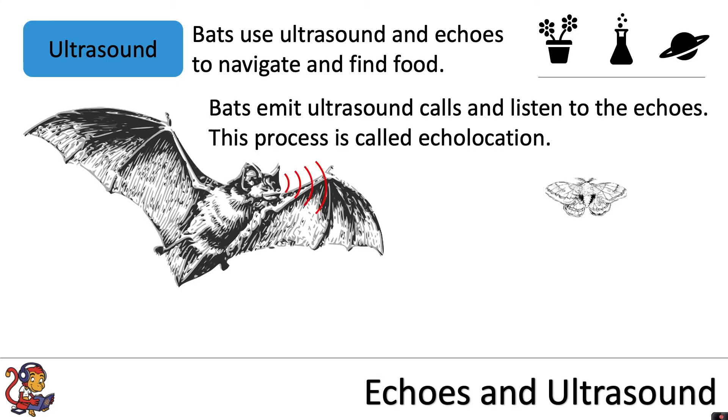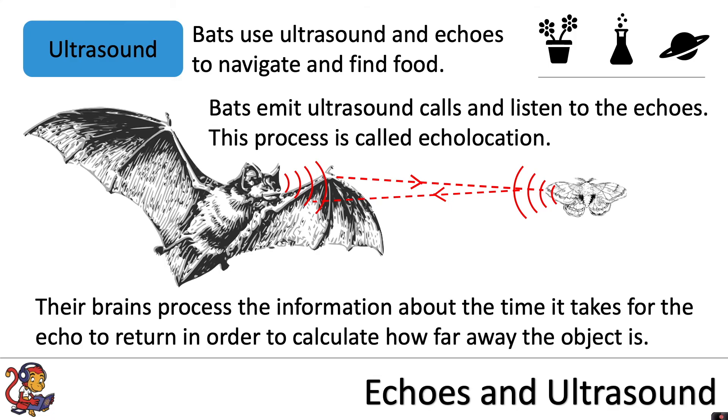The bat would emit its ultrasound call that will bounce off objects—it could be trees or buildings that it's navigating, or when it's hunting, it could be a moth, for example. It will listen for the returning echo, and their brains process the information about the time it takes for the echo to return in order to calculate how far away the object is. Their brains will essentially be doing that distance equals speed times time equation and then making sure that they halve the distance to work out how far away different objects are.